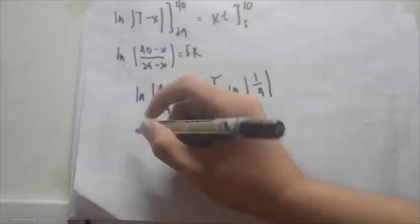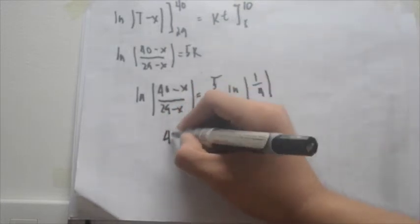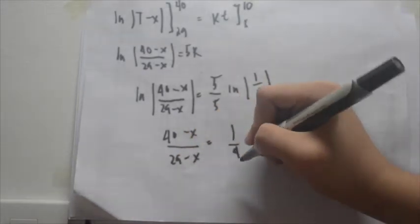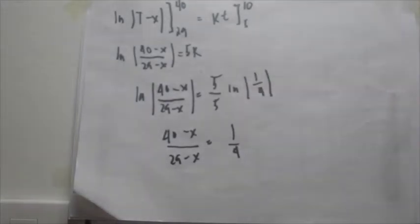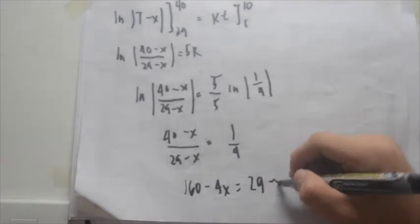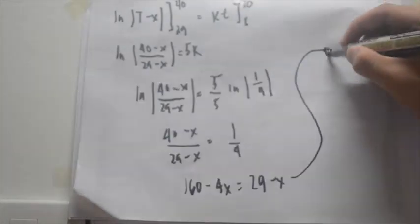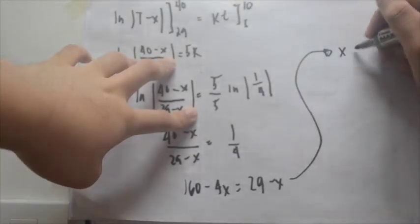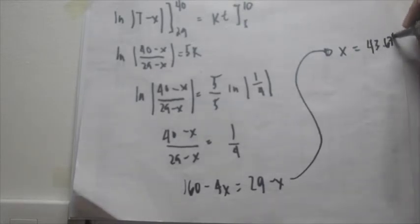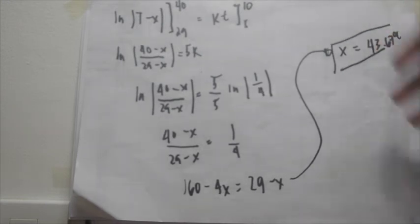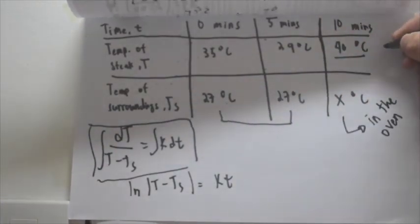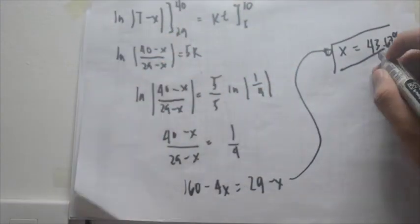To remove the ln, it becomes: (40 minus x) over (29 minus x) equals 1/4. Cross-multiplying: 160 minus 4x equals 29 minus x, which gives us x equals 43.67 degrees Celsius. So the temperature of the oven needed to give us a 40 degree Celsius steak in 5 minutes is 43.67 degrees Celsius.